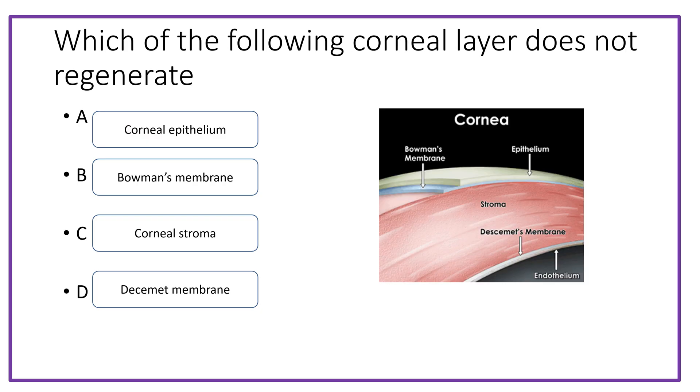Fourth question: which of the following corneal layers does not regenerate? The options are corneal epithelium, Bowman's membrane, corneal stroma, or Descemet's membrane.